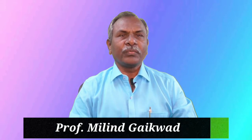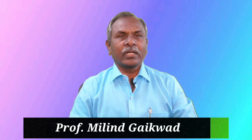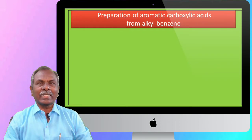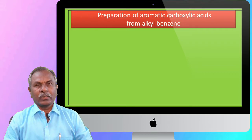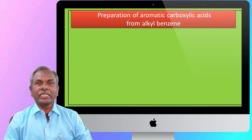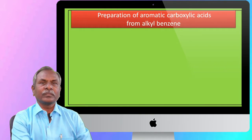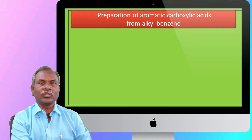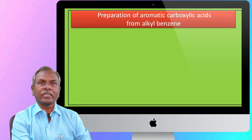Today, in this video, we are going to discuss the preparation of aromatic carboxylic acids from alkyl benzene. The aromatic carboxylic acids are prepared from alkyl benzene by the process known as oxidation. Oxidation is carried out by using dilute nitric acid, acidic or alkaline potassium permanganate (KMnO4), or chromic acid.